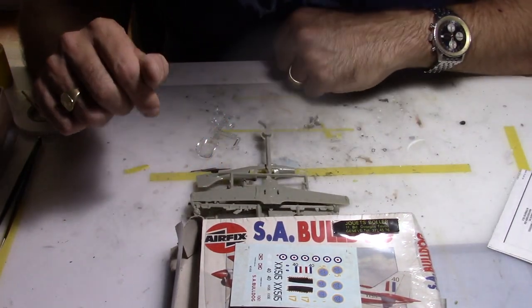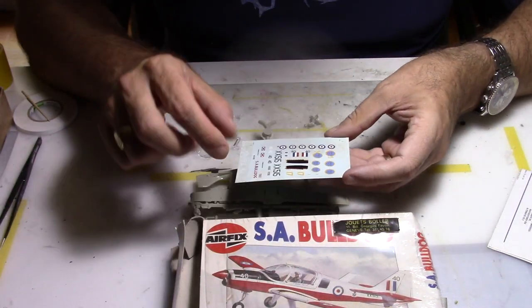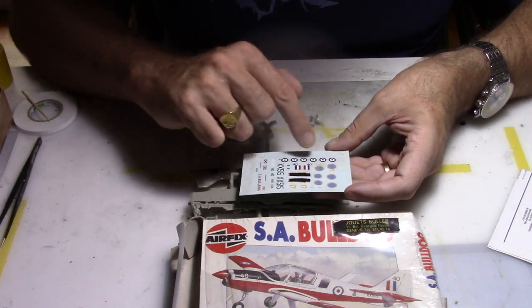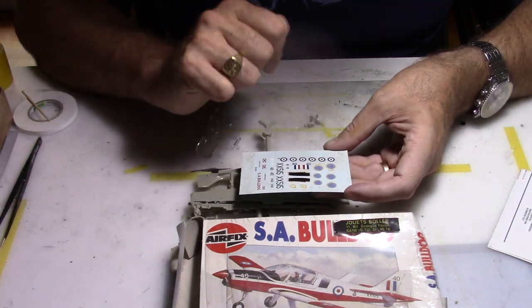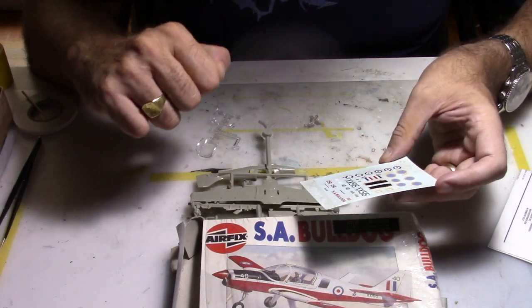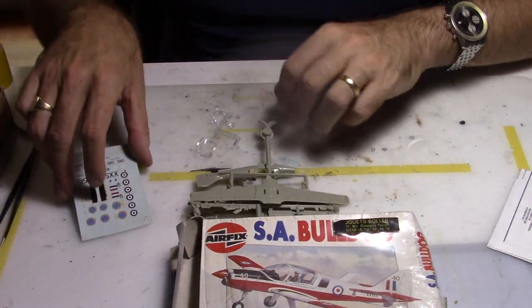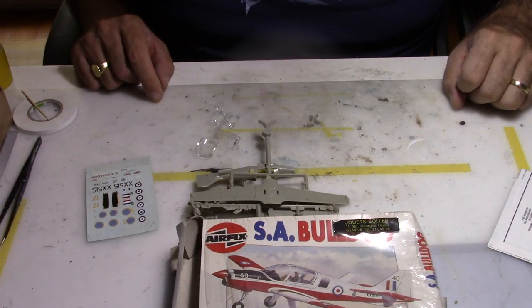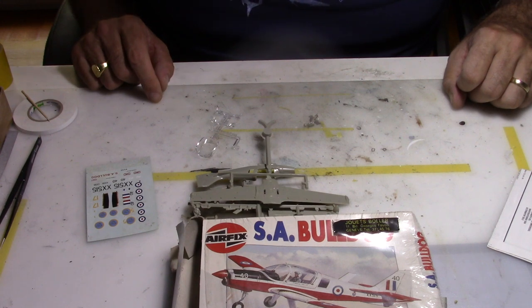The kit comes with two decal possibilities: RAF and Swedish Air Force, but mainly what I will do on that aircraft is civilian markings. So enough of talking and let's start building.